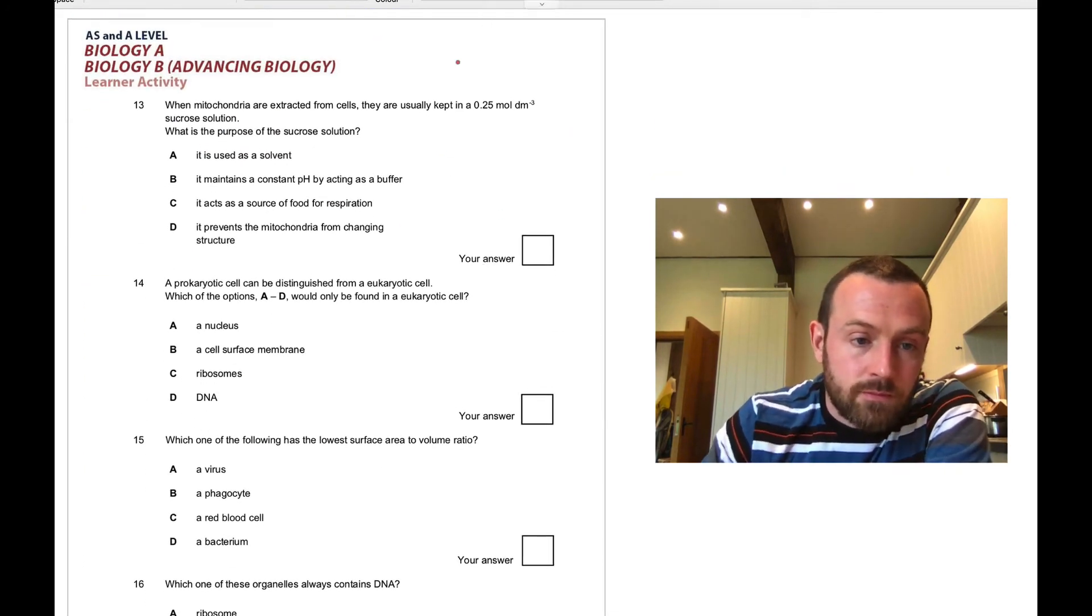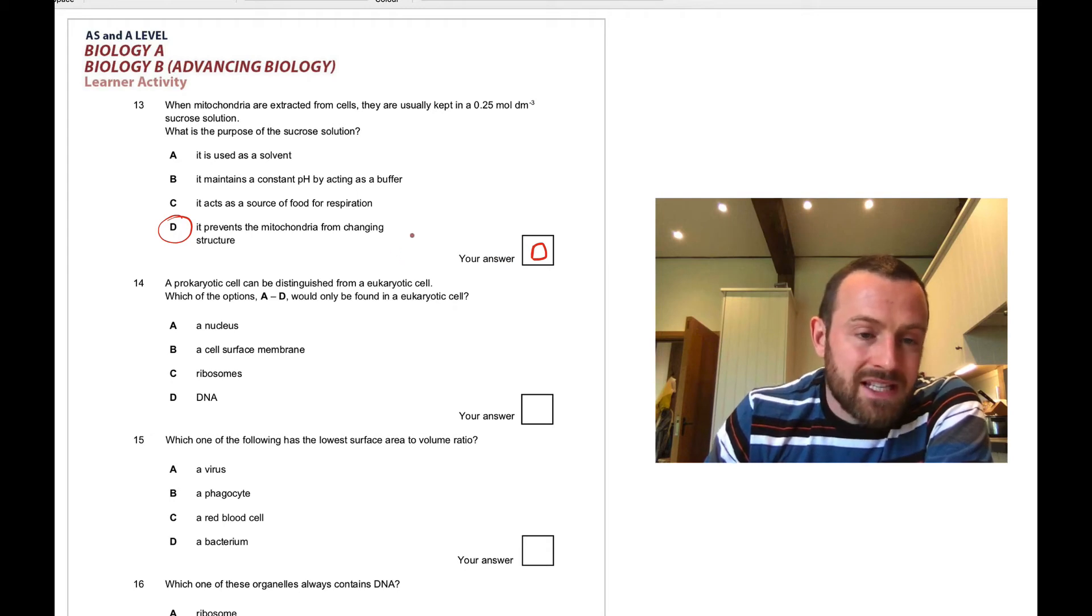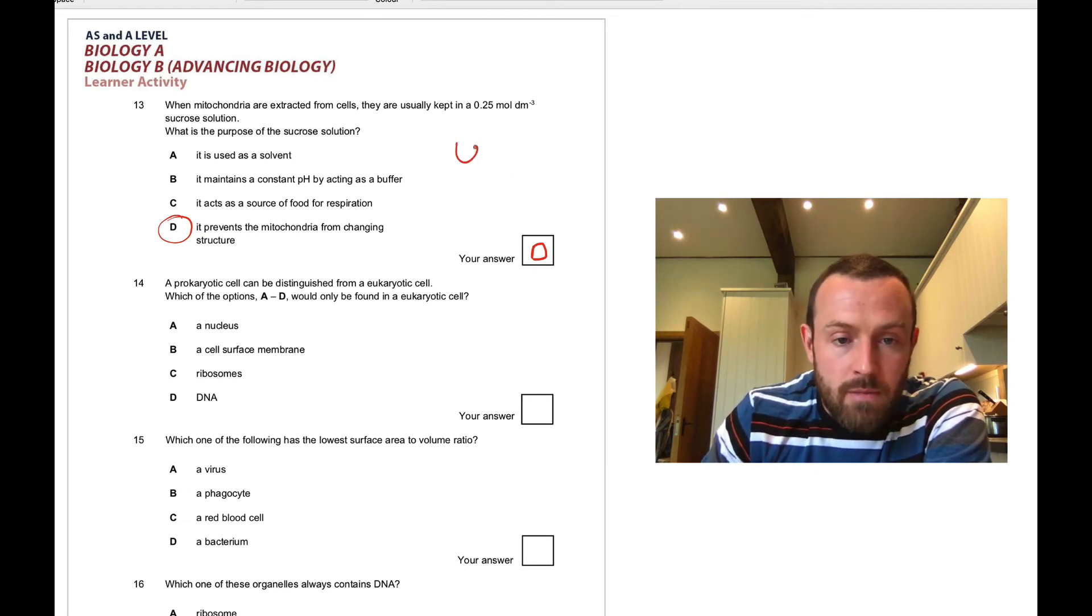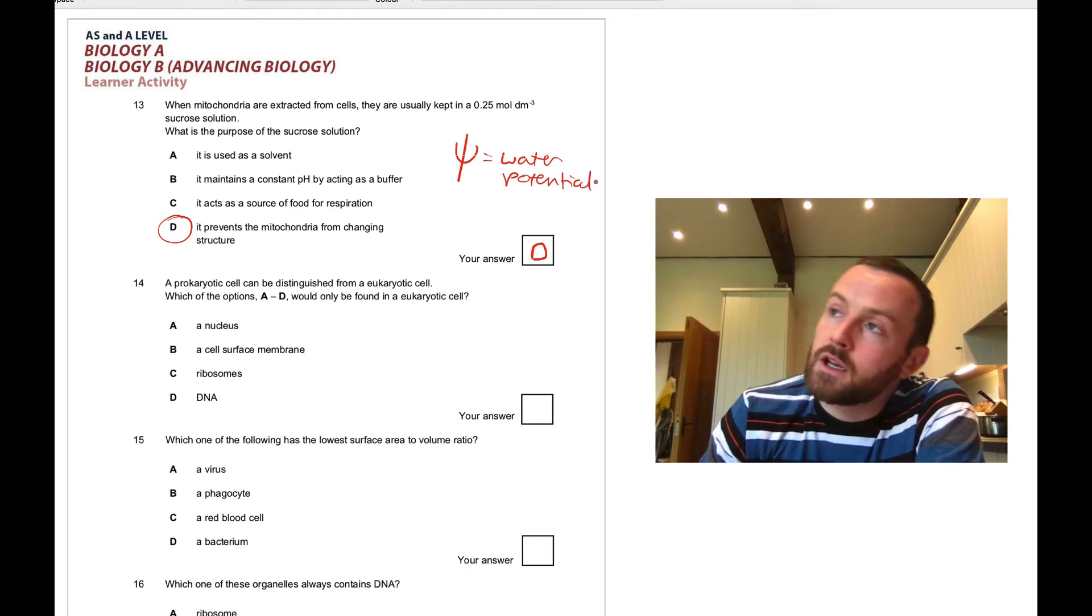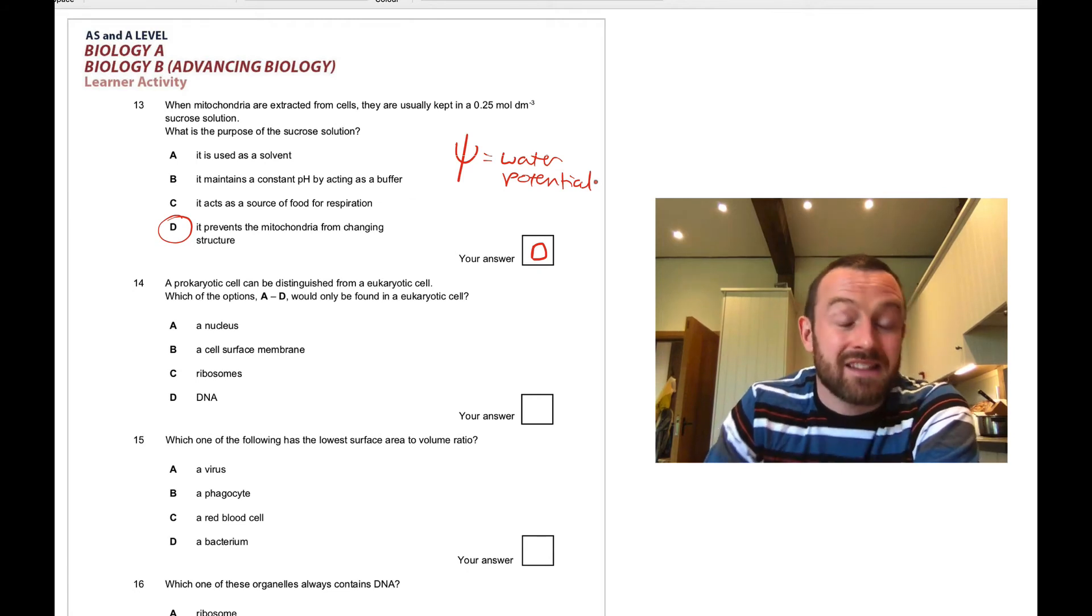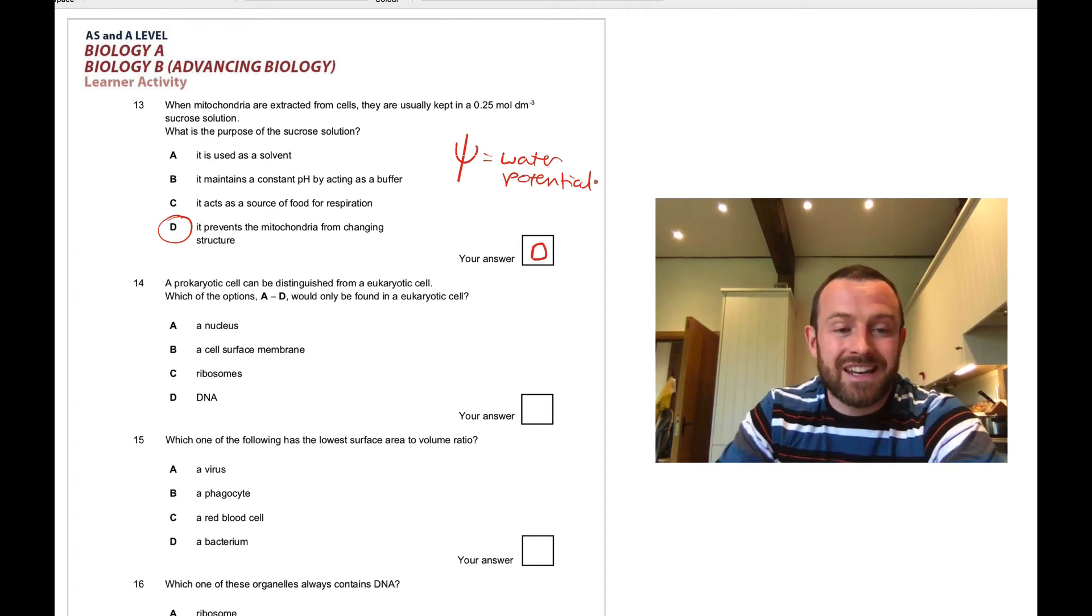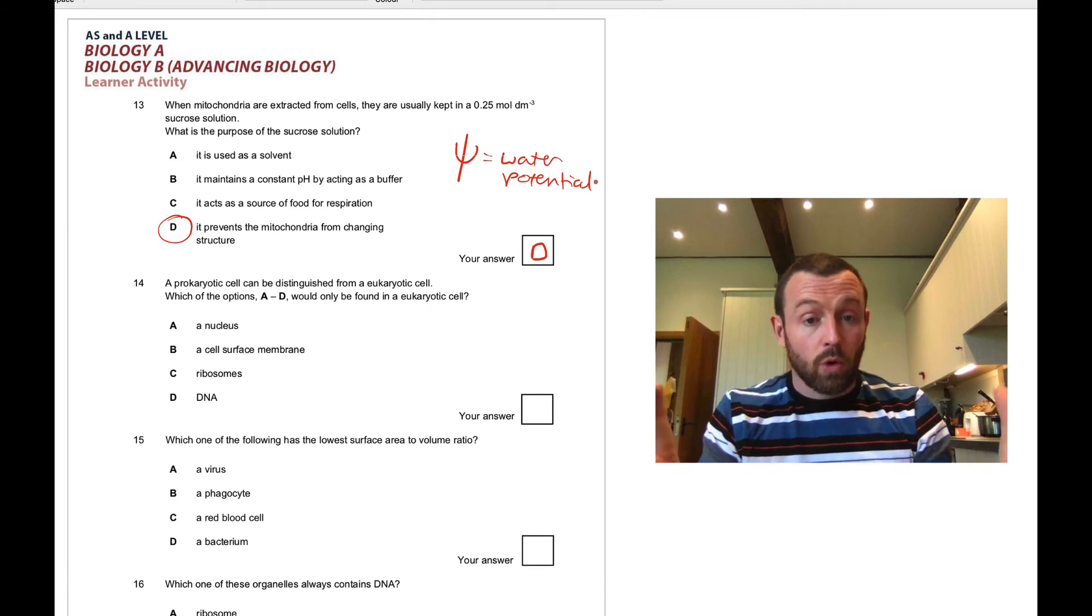Question thirteen: the answer to this one is D, prevents the mitochondria from changing structure. Basically, to make sure that the water potential is the same inside and outside of the mitochondria. Remember, we want to talk about water potential at A-level. You could maybe get away in an exam question with saying isotonic, but it's better to say that the water potential inside and outside the mitochondria are the same, so there will be no net movement of water via osmosis. They won't pop or shrivel for that matter.